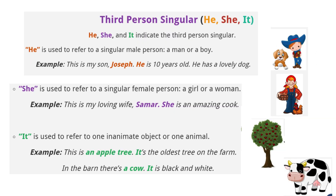Third person singular: he, she, it. 'He' is used to refer to a singular male person, a man or a boy. Example: 'This is my son, Joseph. He is 10 years old. He has a lovely dog.' 'She' is used to refer to a singular female person, a girl or a woman. Example: 'This is my loving wife, Samar. She is an amazing cook.' 'It' is used to refer to one inanimate object or one animal. Example: 'This is an apple tree. It's the oldest tree on the farm. In the barn there's a cow. It is black and white.'